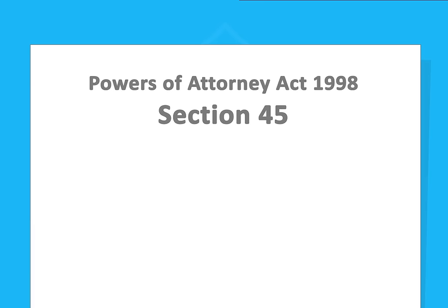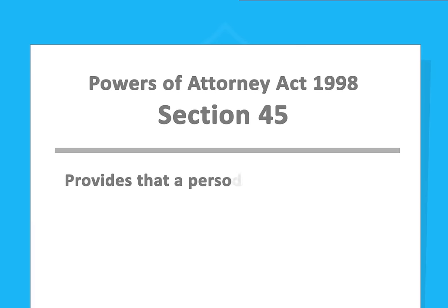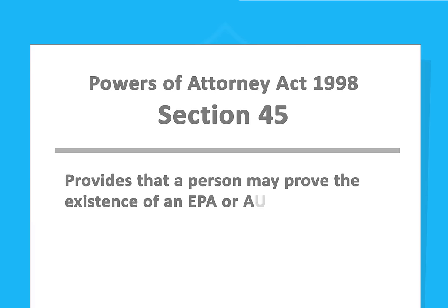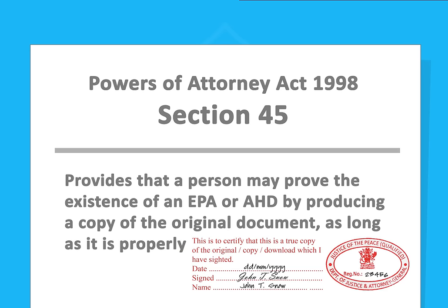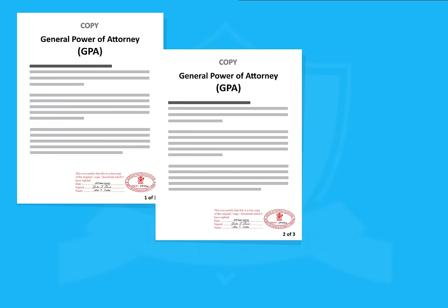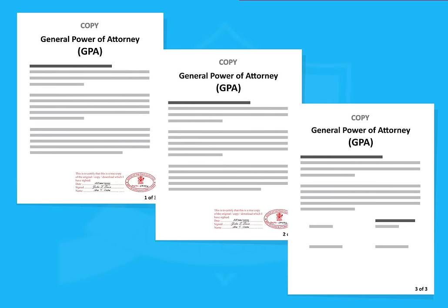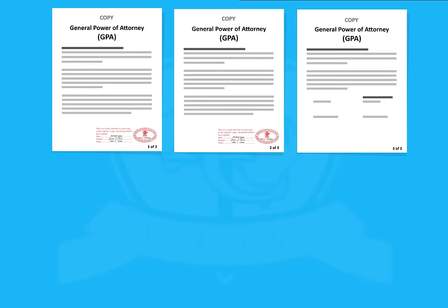Section 45 of the Powers of Attorney Act 1998 provides that a person may prove the existence of an EPA or AHD by producing a copy of the original document, as long as it is properly certified. It further provides that in a properly certified copy, each page of the document except the last page must be certified as a true and complete copy of the corresponding page of the original.